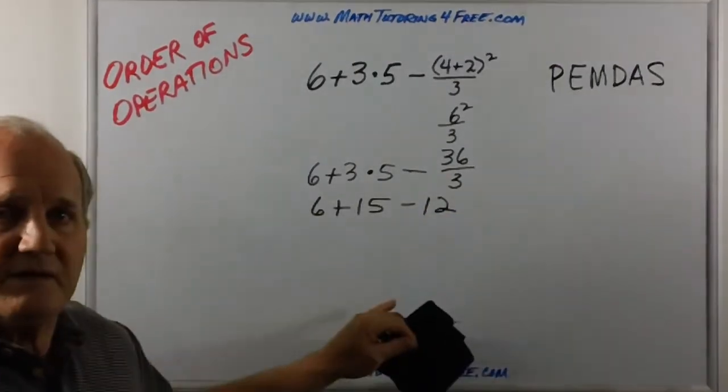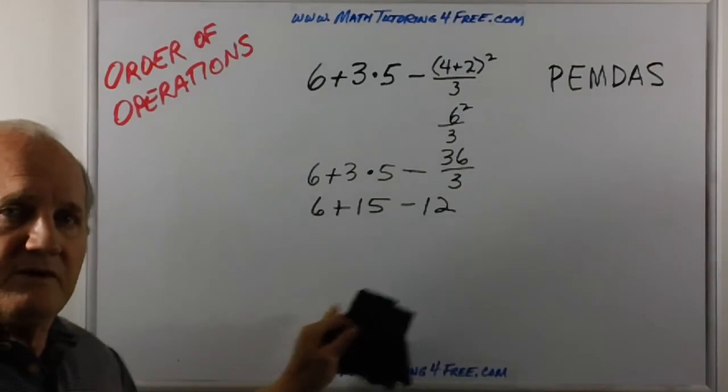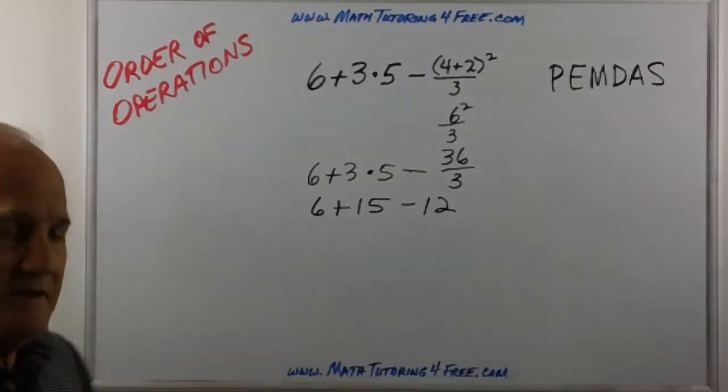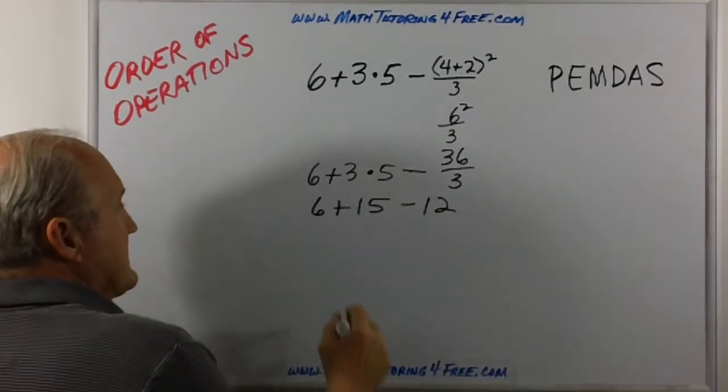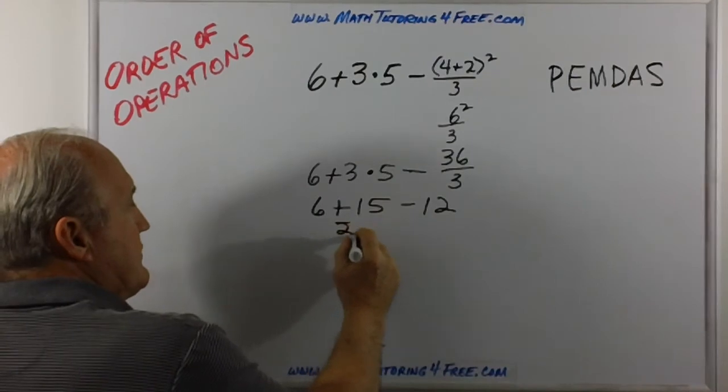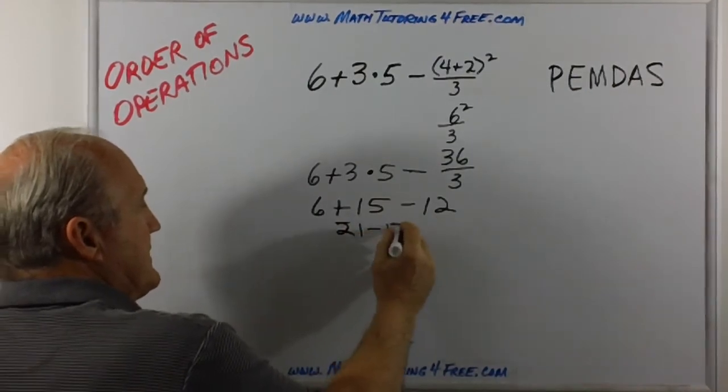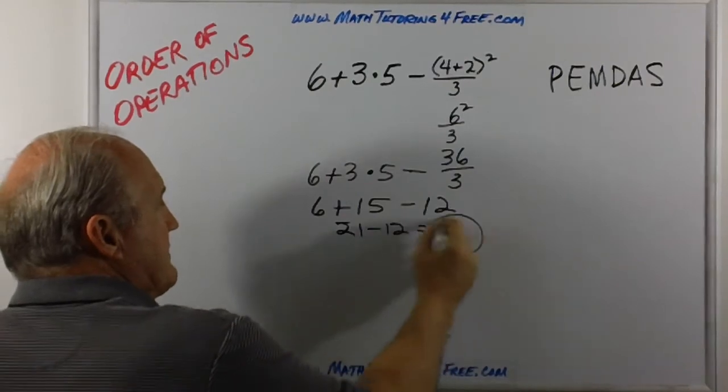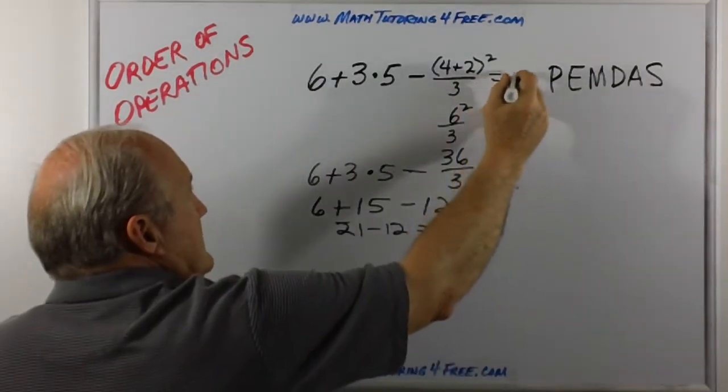Now we're left with the addition and subtraction. And again, we go left to right. Six plus 15 is 21. 21 minus 12 is nine. So our answer is nine.